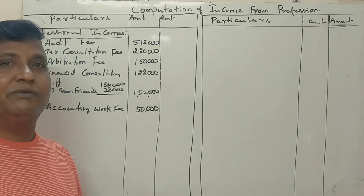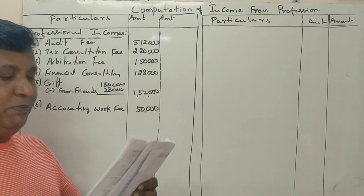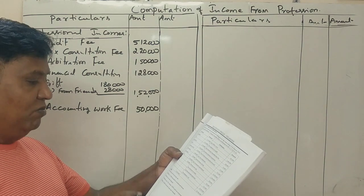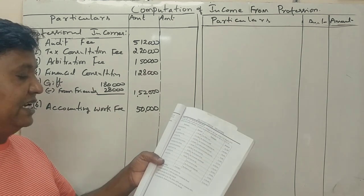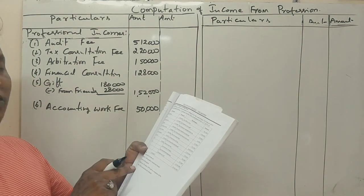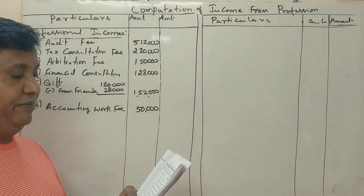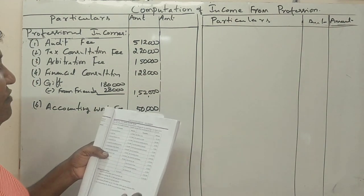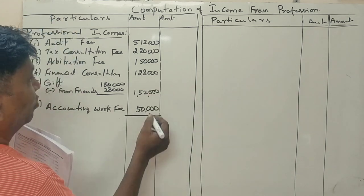Lottery income is taxable under the head Income from Other Sources, not from profession. So we move to the payments side. Next: office rent.